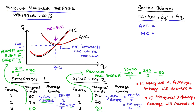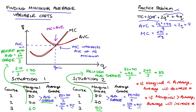Our average variable cost is just the variable cost component of our total cost — any part of total cost that has q attached to it. So that's 2q squared plus 4q, divided by q. This gives us 2q squared divided by q equals 2q, plus 4q divided by q equals 4. So AVC equals 2q plus 4. Our marginal cost is just the derivative of our total cost function with respect to q: the constant drops out, giving us 4q plus 4.